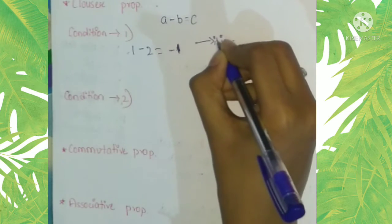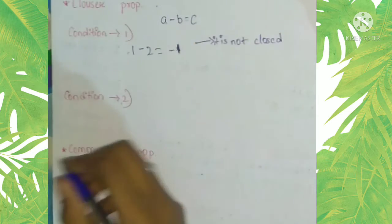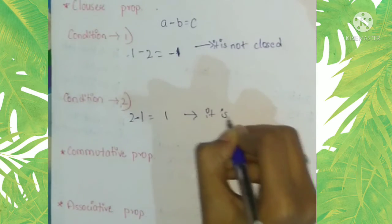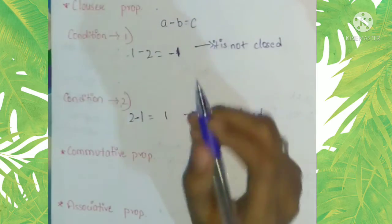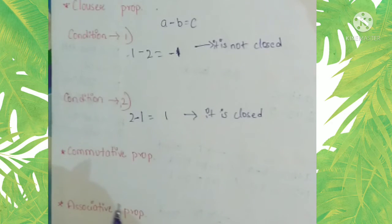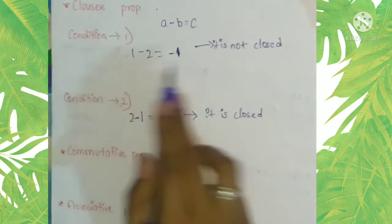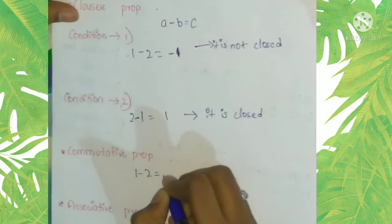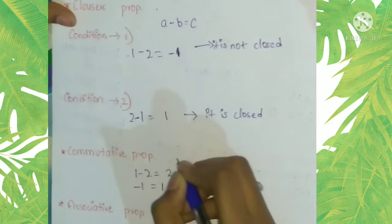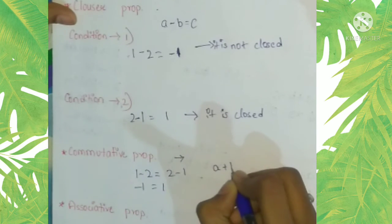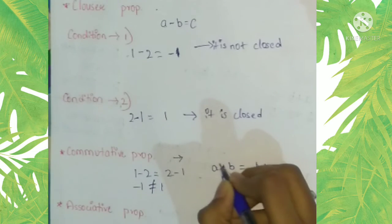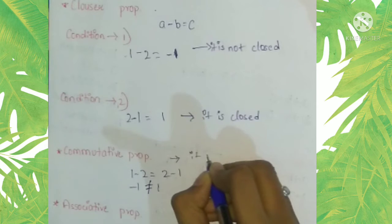In condition two, if we swap and take two minus one, we get one, which is a whole number. However, since we don't always get a whole number, subtraction is not closed under closure property for whole numbers. For commutative property, a minus b should equal b minus a, but here we get minus one on one side and plus one on the other — they are not equal — so commutative property is not closed under subtraction on whole numbers.